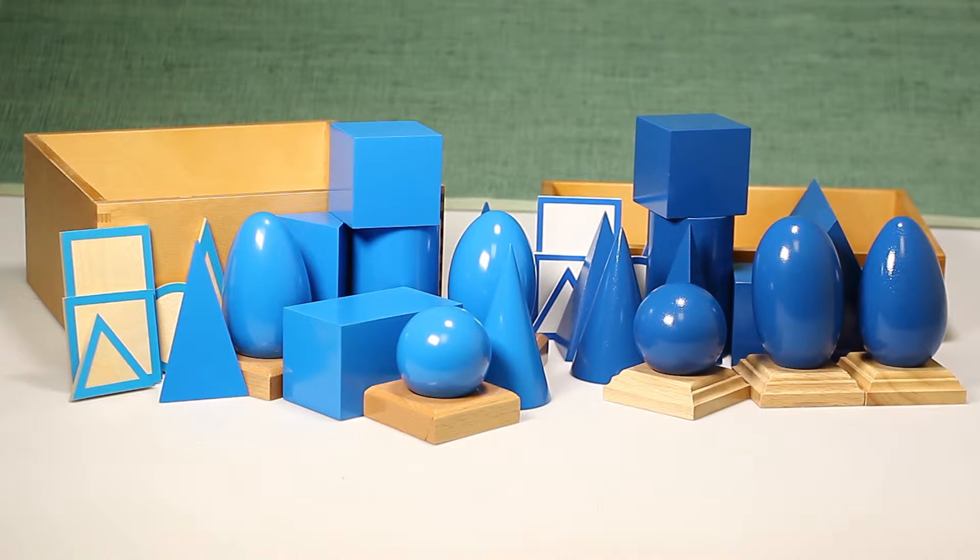S-46 are value line geometric solids and P-S-15 are premium quality geometric solids. These materials focus on helping the child become aware of the solid shapes that surround their environment. It is also a preparation for geometry.